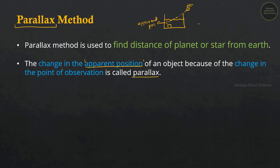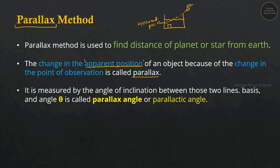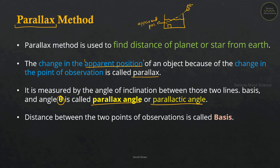In the Parallax method, if we observe an object from different positions, the apparent position of the object shifts. This shift forms an angle, which we call the Parallax angle or Parallactic angle, denoted by theta. The distance between the two points of observation is called the basis.